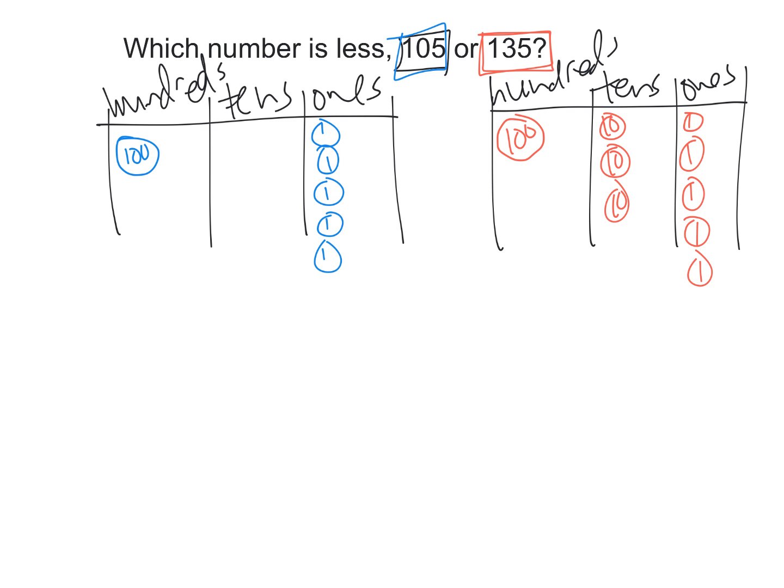And now we want students to compare. Which one is bigger, or which one is less? In this case, they're specifically asking us which one is less. We can compare that - they both have 100, and they both have 5, but 135 has these three tens that this guy doesn't have. Therefore, we know that 105 is less than 135.